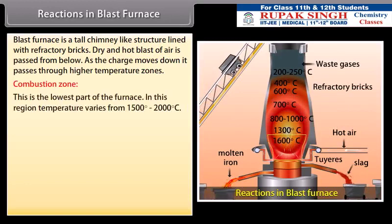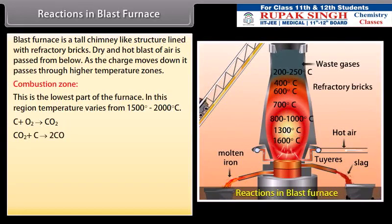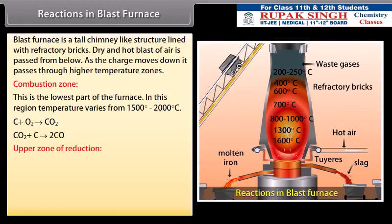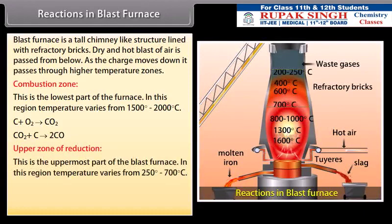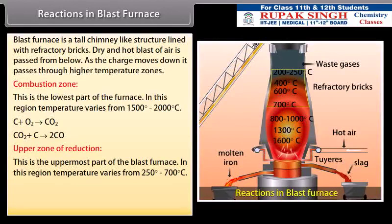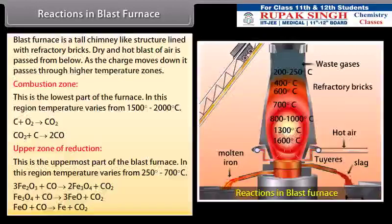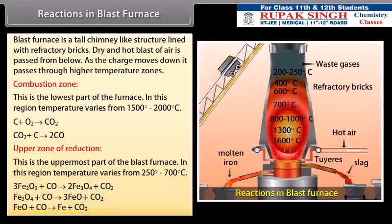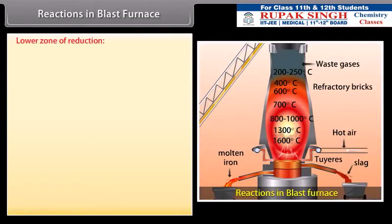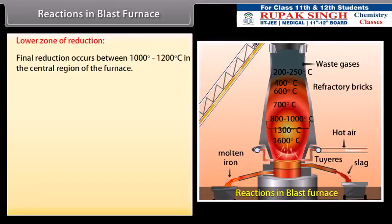Combustion zone: This is the lowest part of the furnace. Here, coke burns in hot blast of air. In this region, temperature varies from 1500 degree to 2000 degree Celsius. Carbon dioxide rises upwards and meets with red hot coke. Upper zone of reduction: This is the uppermost part of the blast furnace. In this region, temperature varies from 250 degree to 700 degree Celsius. Here, carbon monoxide reduces oxides of iron into spongy iron.